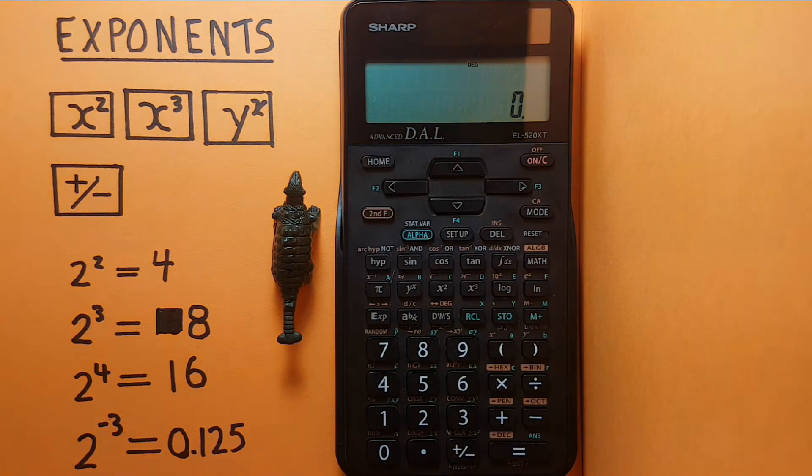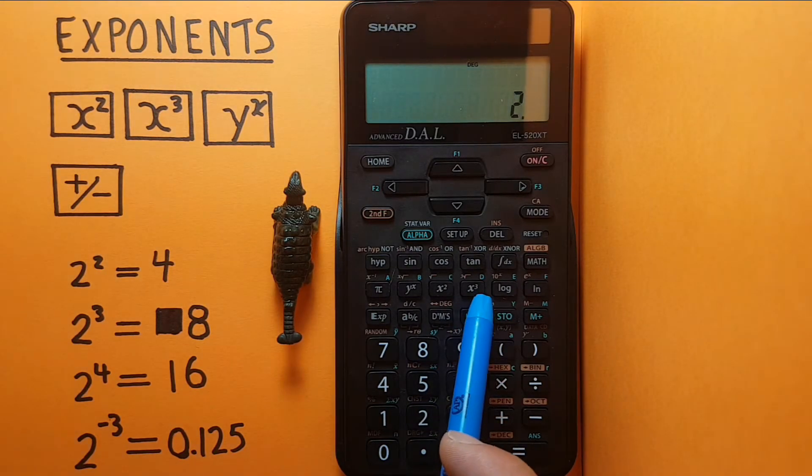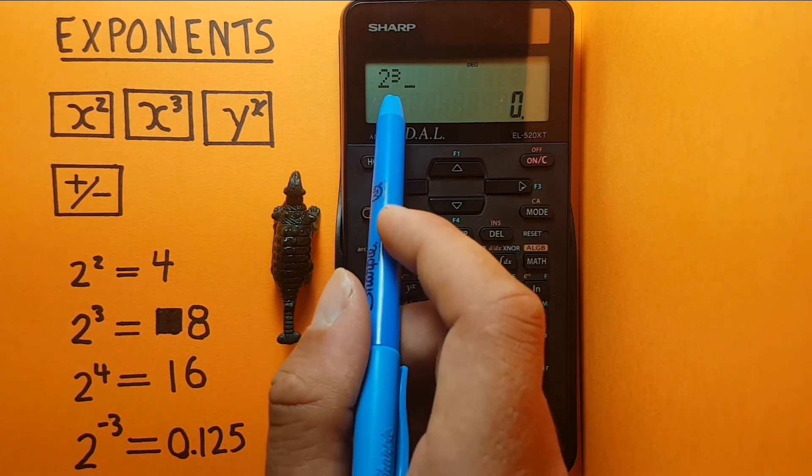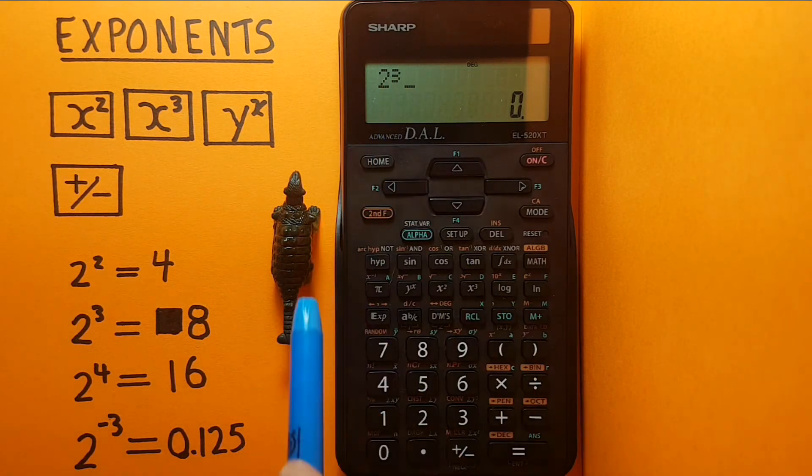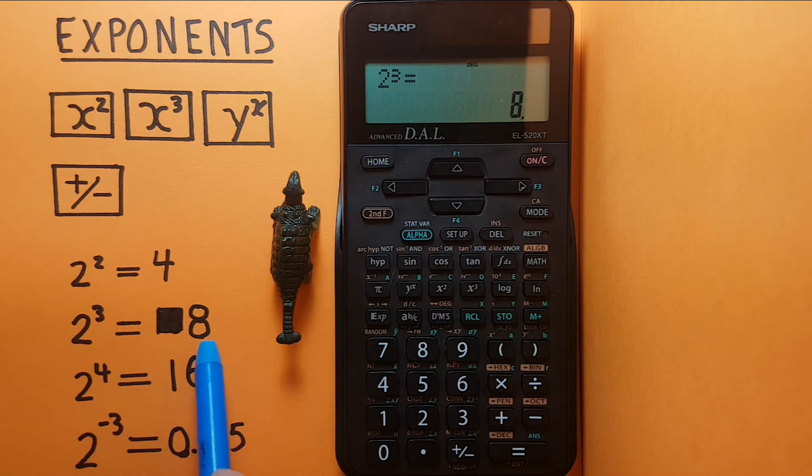Okay, and if we want to cube a number, we enter the number first, so 2 x cubed. Again at the top of the screen, 2 cubed equals 8, which is the correct number.